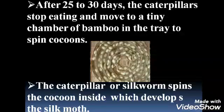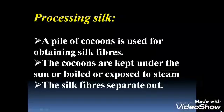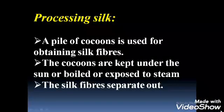Now we can discuss processing of silk — how we process silk. Silk is obtained from cocoons, so after rearing the silkworm, the next step is the processing of silk.